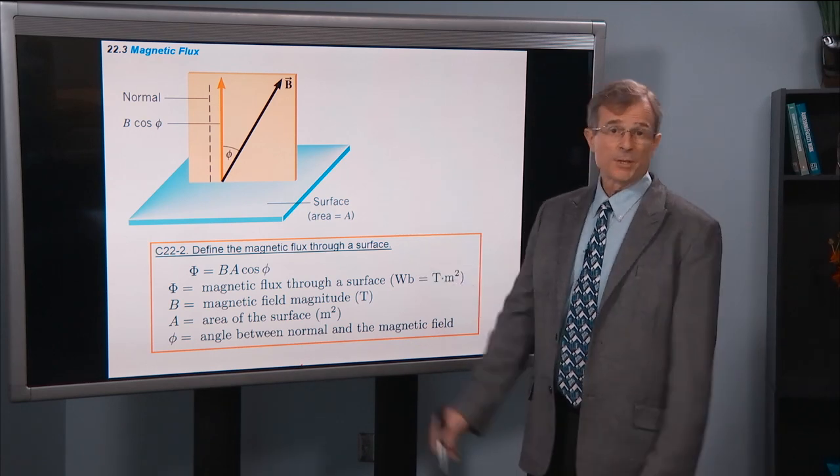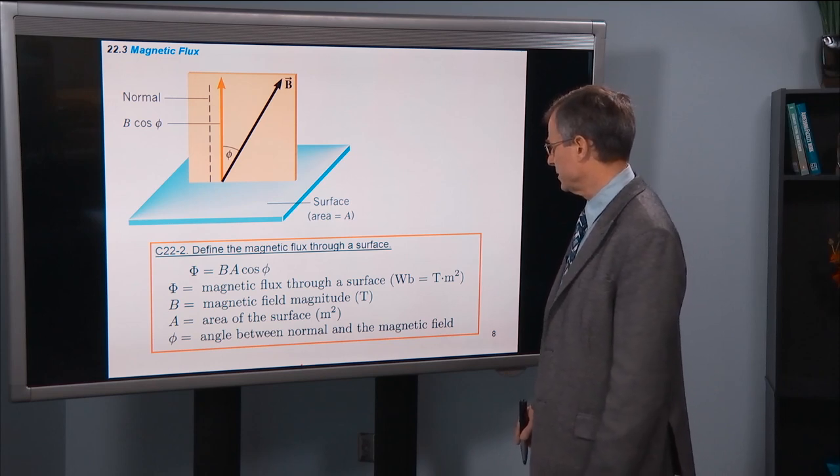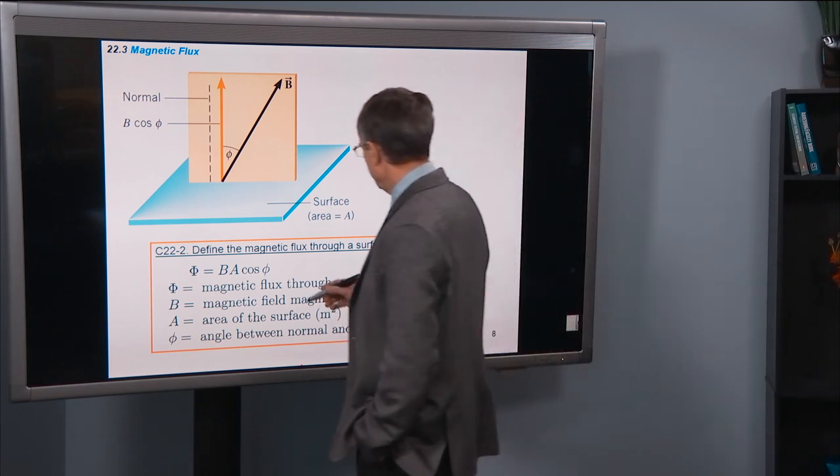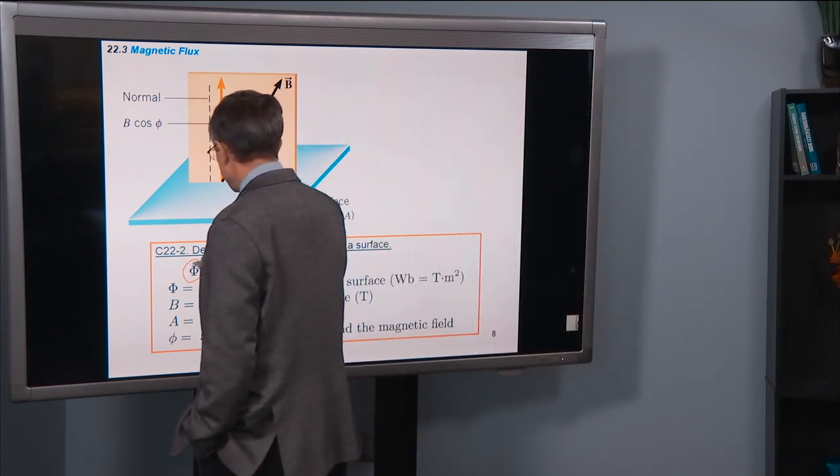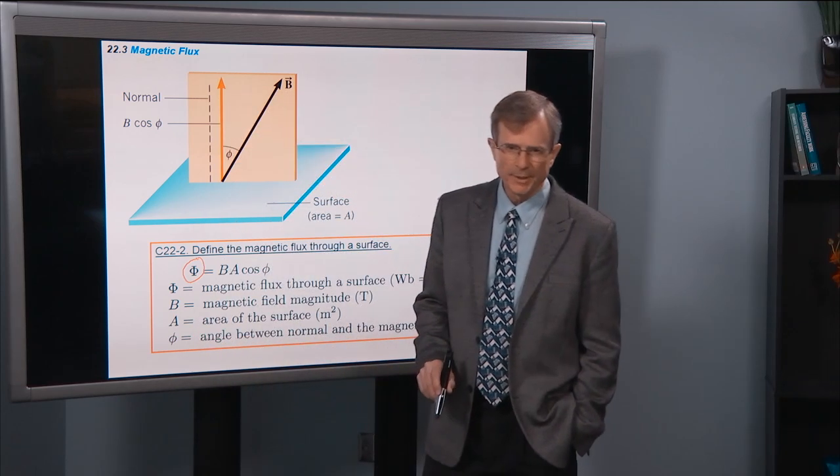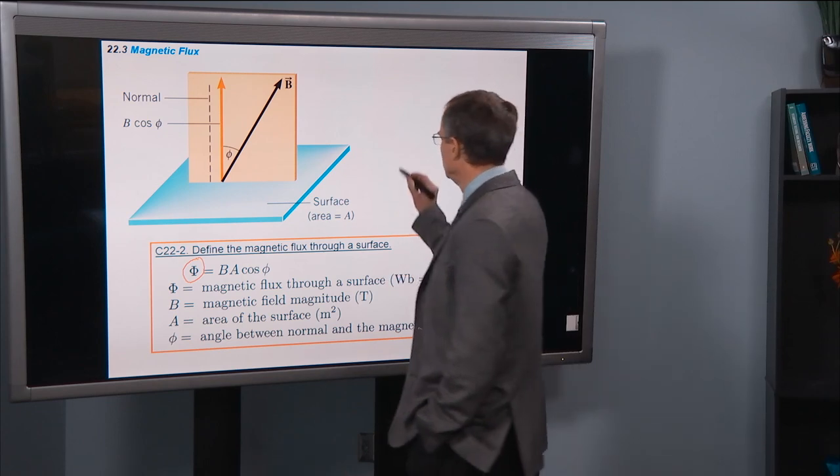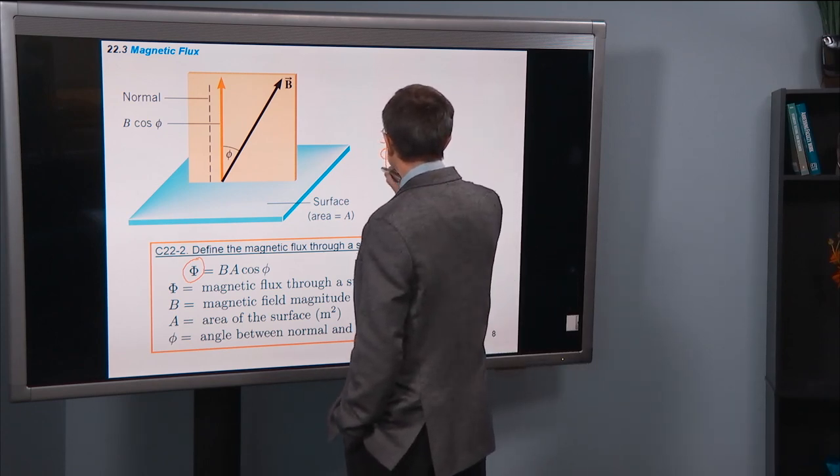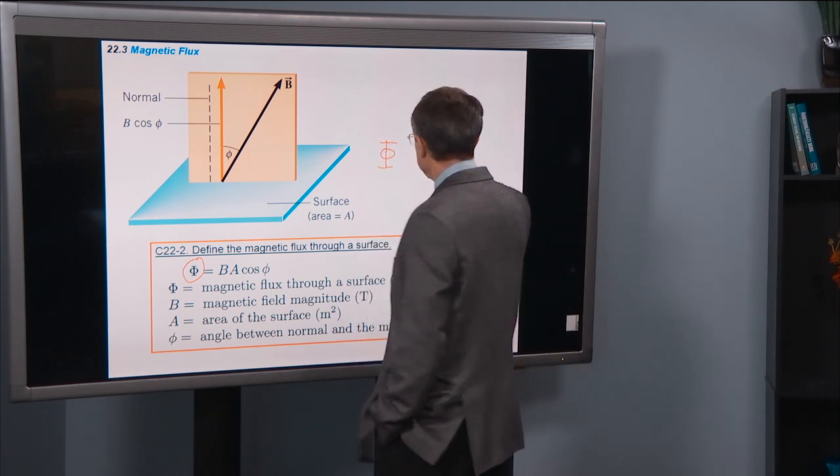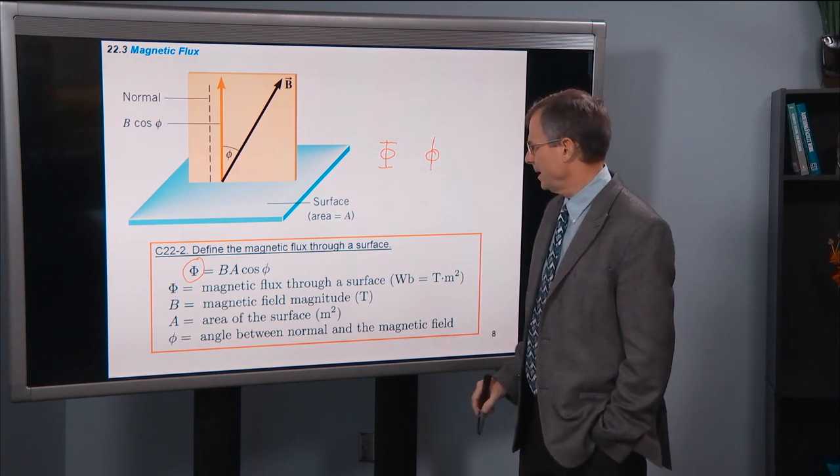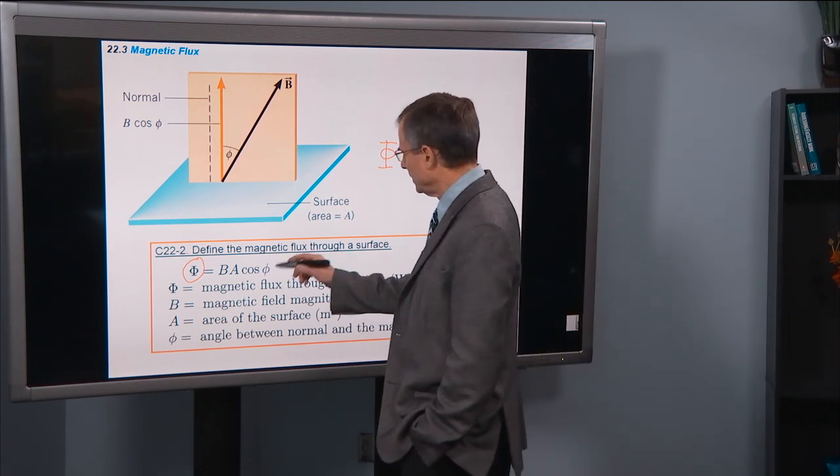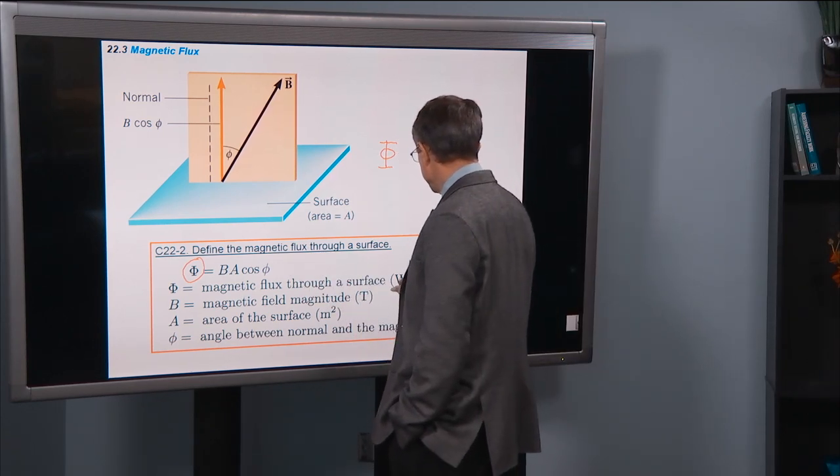And this is just a definition, so we can't argue with the definition. The Magnetic Flux is denoted by the Greek symbol, capital Φ. This is a capital Φ in Greek, this is a lower case Φ. And that's the magnetic flux through a surface.